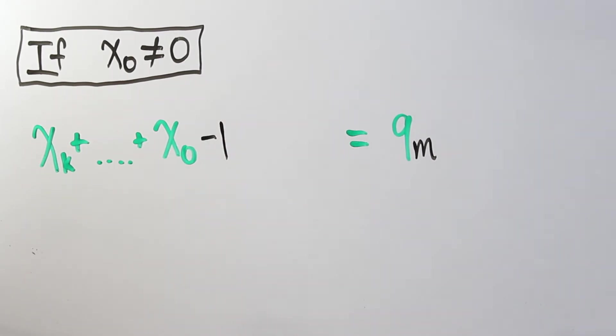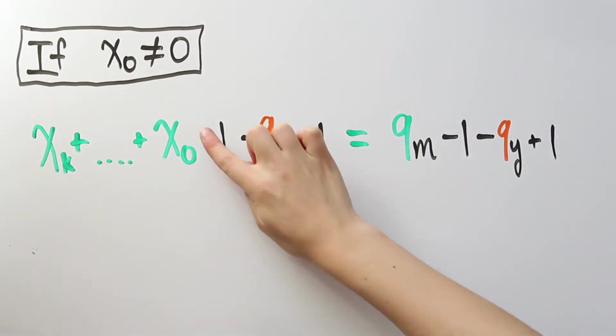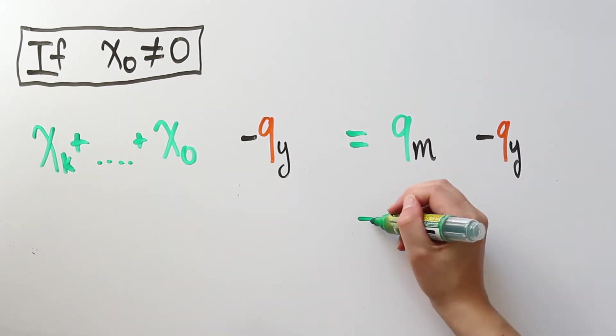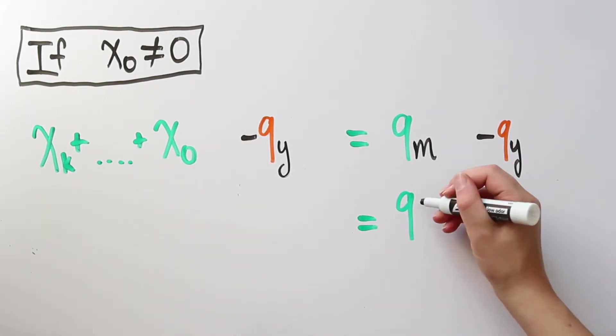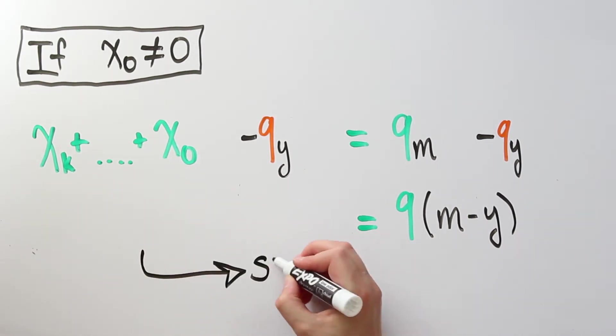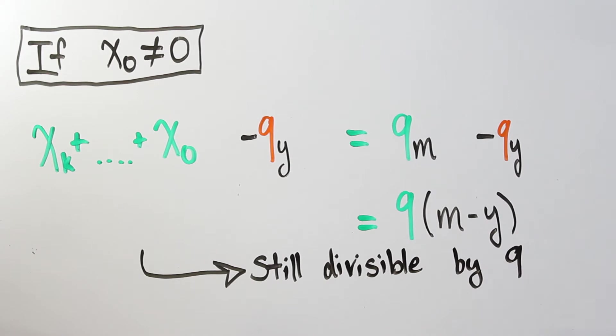Then we subtract 1 from the 1's place, subtract some number of 9's, that number might be 0, and then add 1 to some higher place. The plus 1 minus 1 cancels out, and we are left with the old sum minus some number of 9's. If we start with a multiple of 9, and subtract a whole number of 9's, then we end up with something which is still divisible by 9. So this means that the 9's trick works for n plus 9 in this case too.